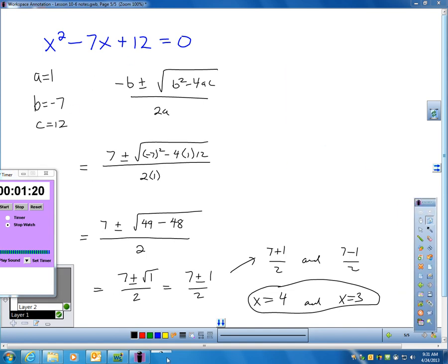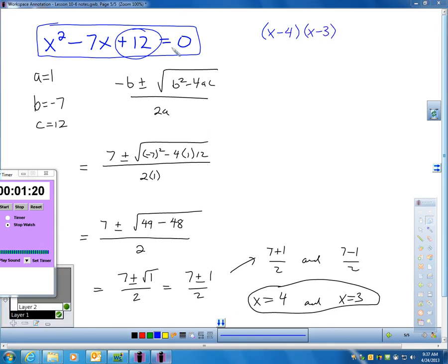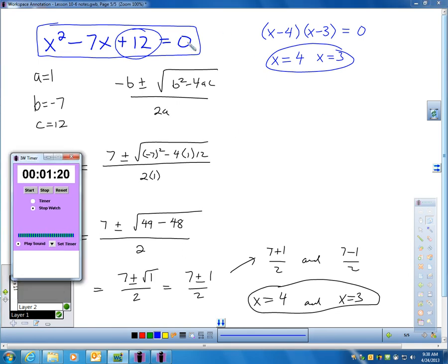Now, let's go back to this problem. Think about factoring for a minute. What times what's 12 but adds up to negative seven? And I'm sure many of you watching this video would be like, well, heck, Mr. Lomansky, that's easy. Four times three is 12, and four plus three is a seven. So if I just did X minus four and X minus three, that's the correct factorization. Well, do you realize that you would have gotten four and three for your solutions probably in about 20 seconds? So again, if you can factor, that can be by far the quickest method to solving a quadratic.